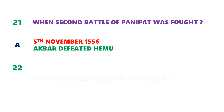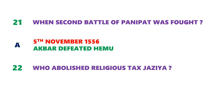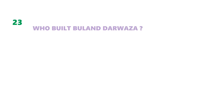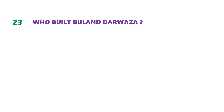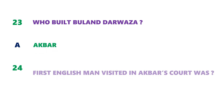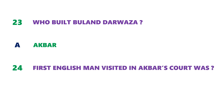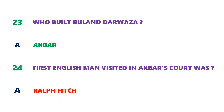Next question: who abolished the religious tax Jazia? The answer is Akbar. Question number 23: who built Buland Darwaza? The answer is Akbar. Next question: who was the first Englishman to visit Akbar's court? The answer is Ralph Fitch.